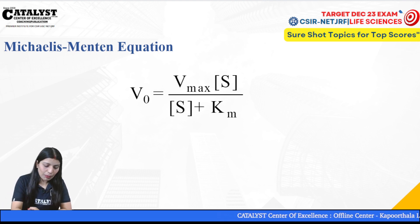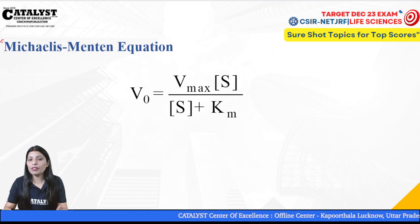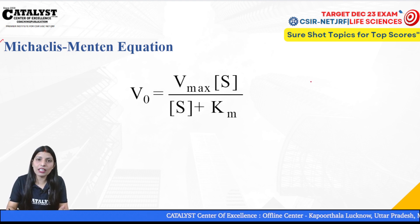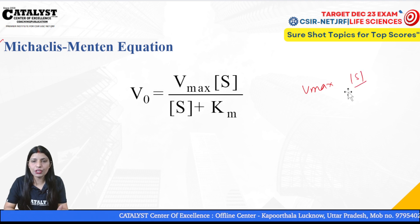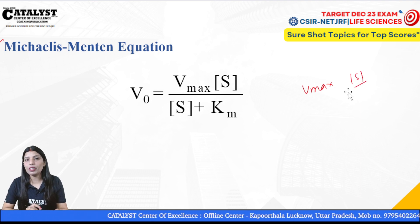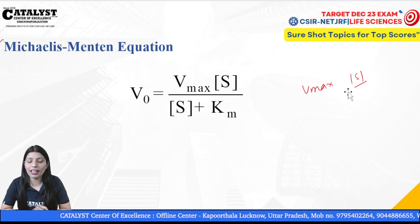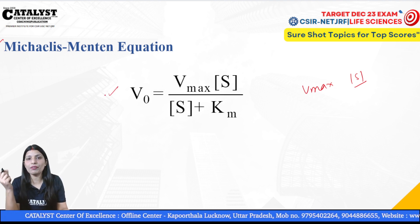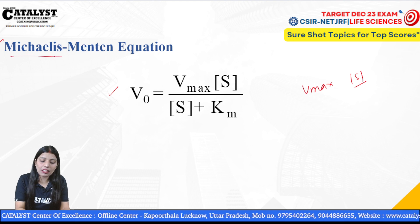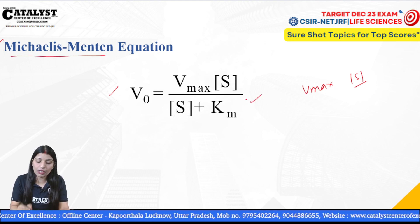The Michaelis-Menten equation was derived just to get an idea about the relationship between Vmax and substrate concentration — if the substrate concentration increases, what impact will there be on the velocity of the enzyme? The first satisfactory explanation was given by Michaelis and Menten, and from that this equation was derived.